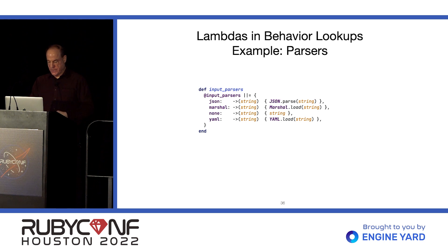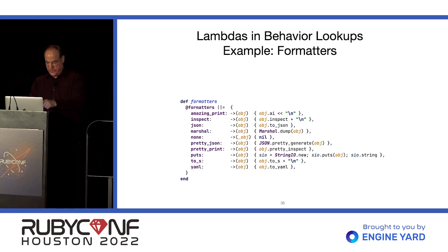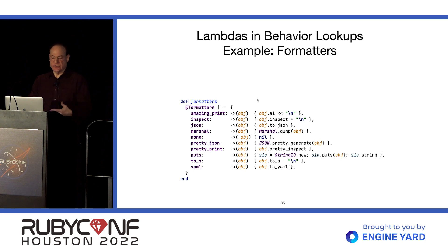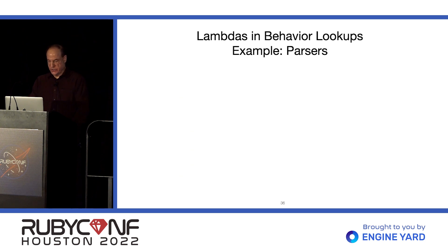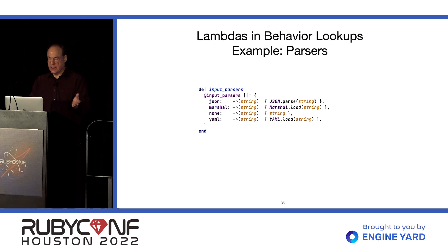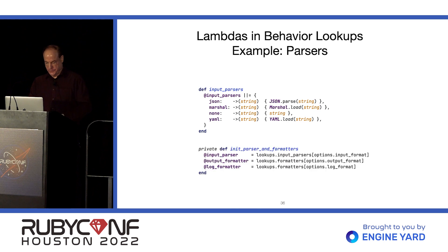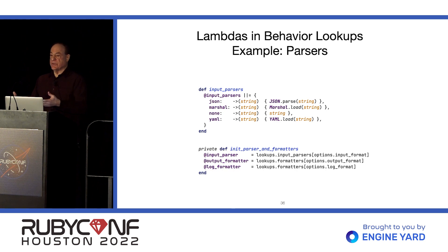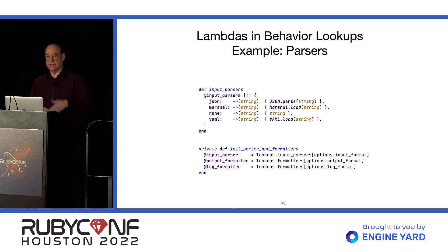Same thing with parsers. These callables all need to have the same interface — take the same parameter and return the same kind of thing. In short, they need to be interchangeable. For formatters, we take an object and return a string; for parsers, we take a string and return an object. This is where the configuration puts it all together — it looks up the behaviors corresponding to the options, stores them in instance variables, and uses them later.